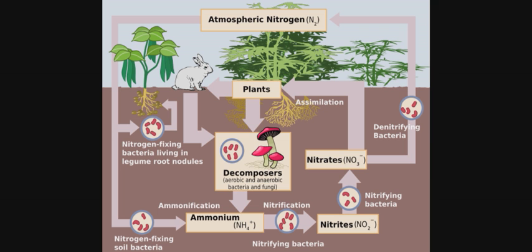Next is nitrogen assimilation. Plants absorb nitrates and use them for nucleic acids and proteins. Animals convert plant protein into animal protein. They eat plants and synthesize the proteins from their food.